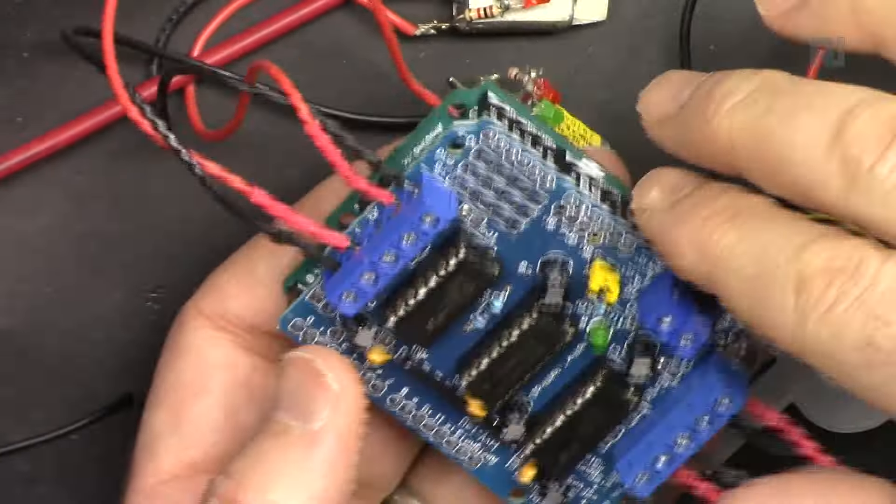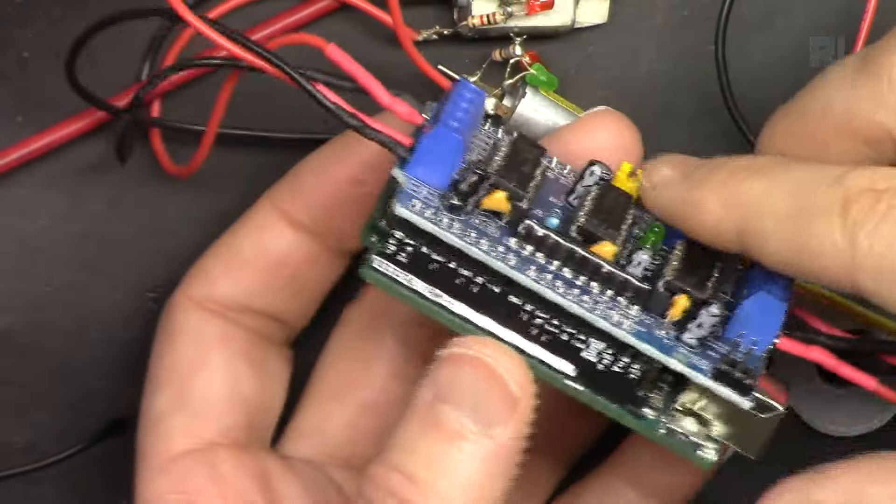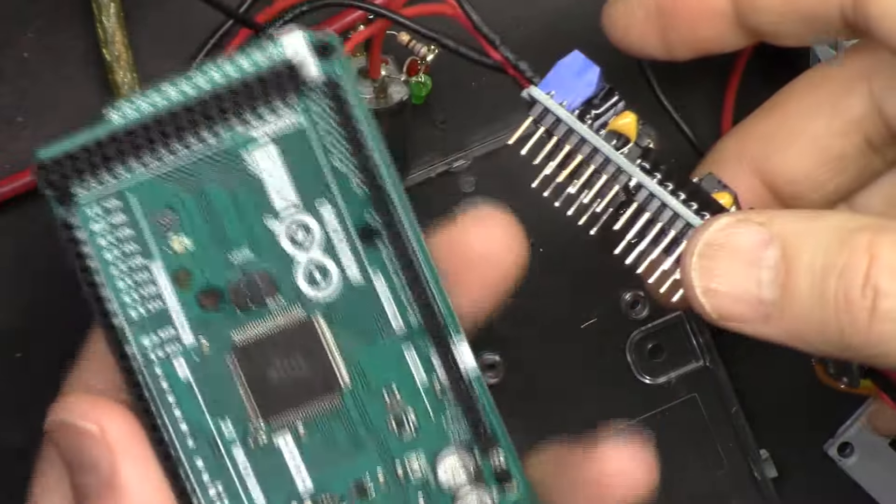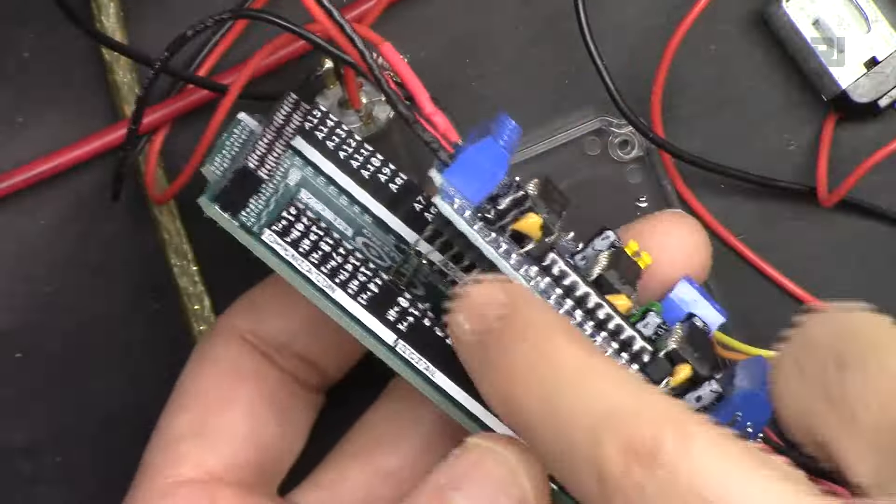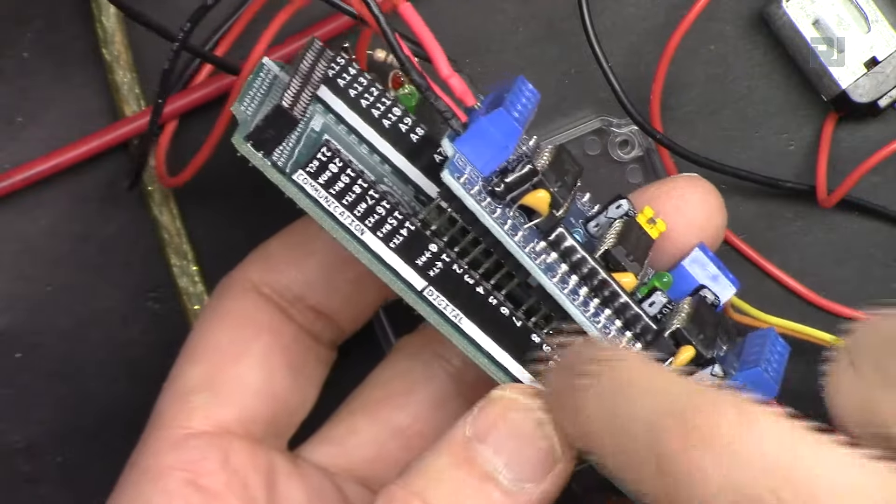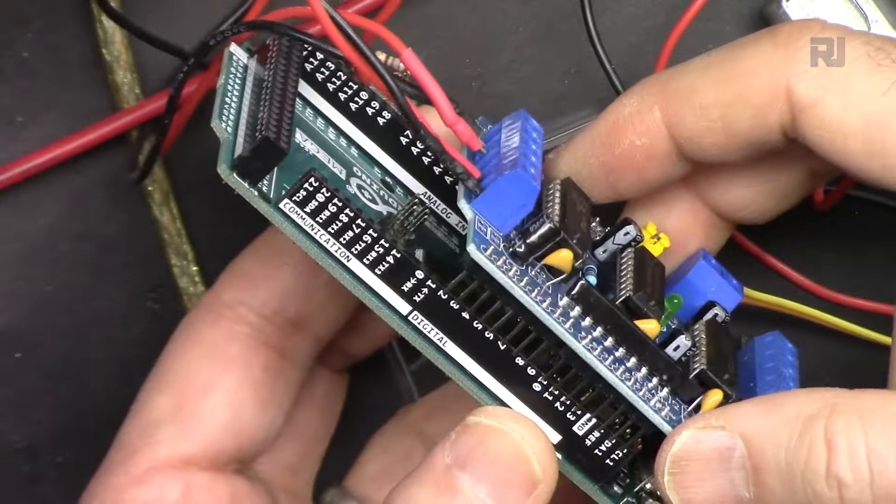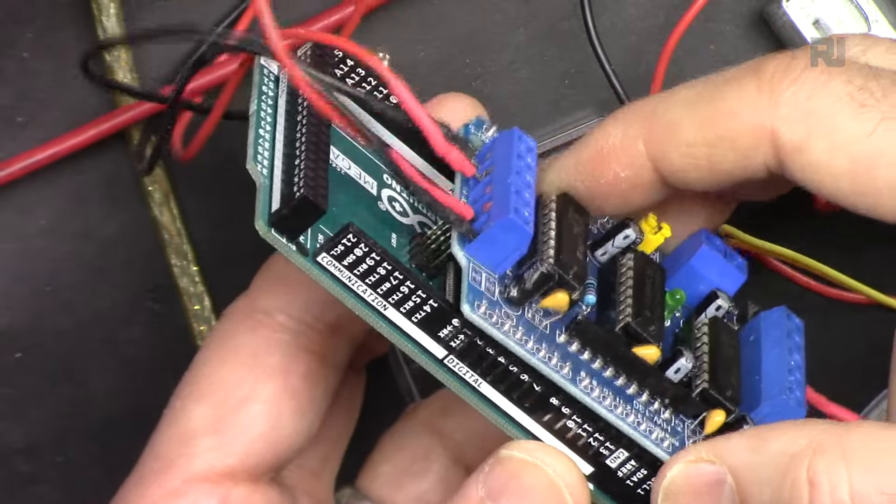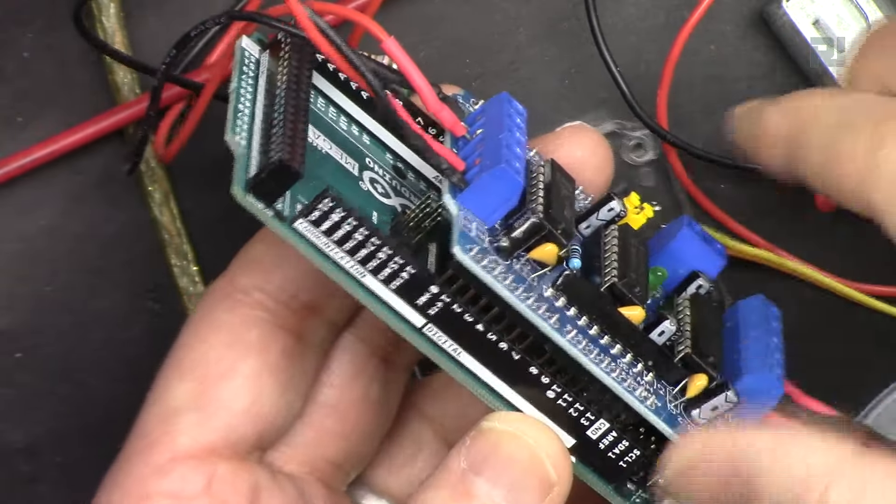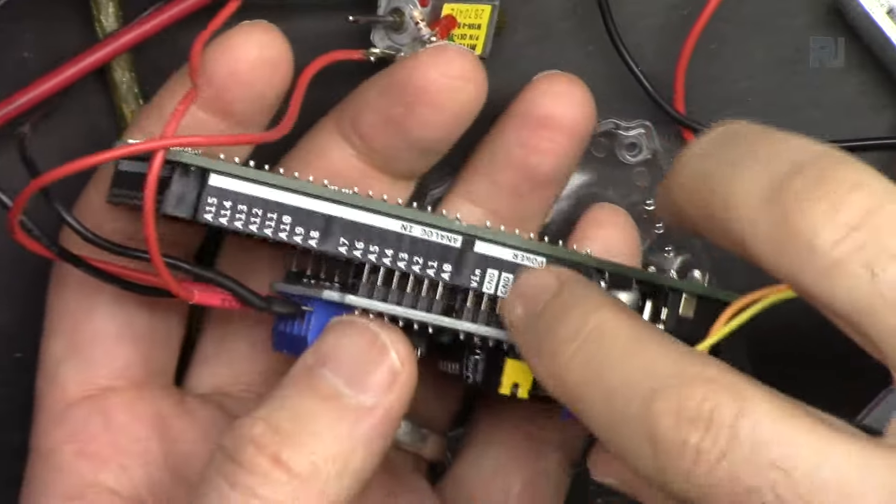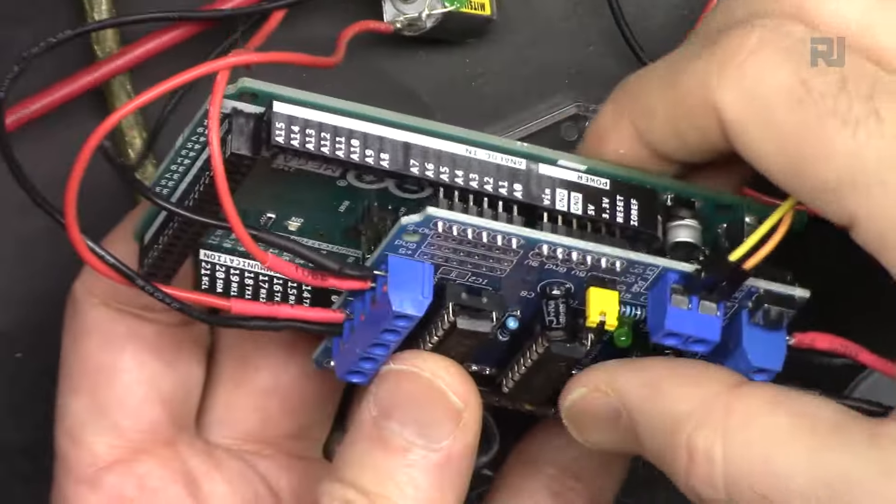The shield can be also inserted or attached to Arduino Mega. Make sure that you attach it to these pins because these are the exact configuration as Arduino Uno. So pin one is here at pin one and here every other pin is aligned.